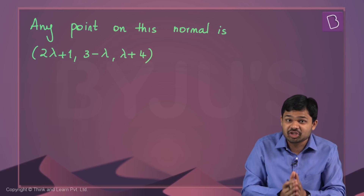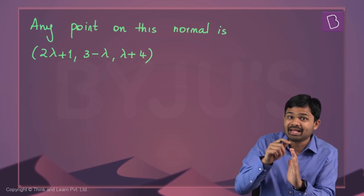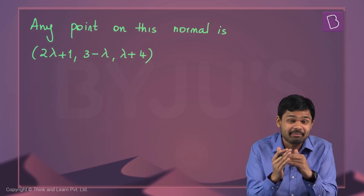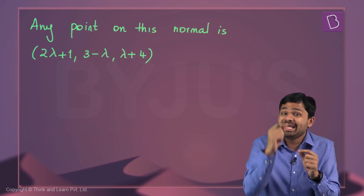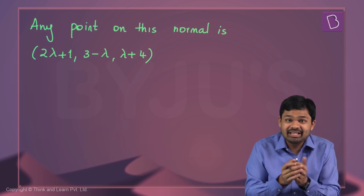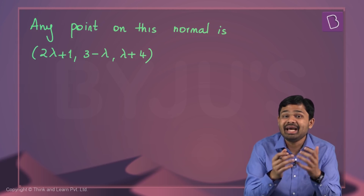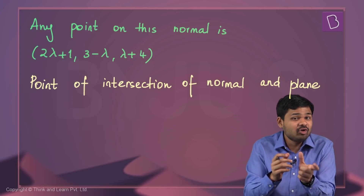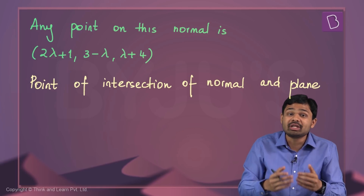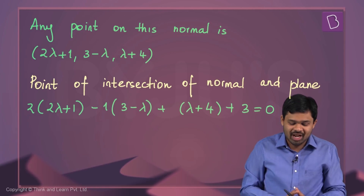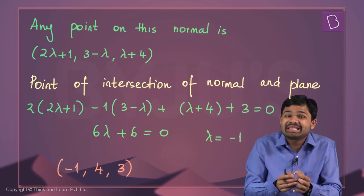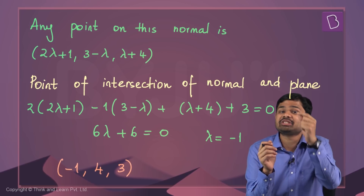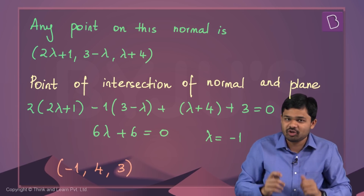Now let's compute the point of intersection of this normal line with the plane, because that intersection point is the midpoint of the point on the given line and the corresponding point on the image line. Substituting the parametric point (2λ + 1, 3 − λ, λ + 4) into the plane equation gives us the value of lambda, which turns out to be minus 1. So the point (−1, 4, 3) lies on the plane and is the midpoint of the point on the given line and the point on the image line.